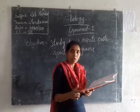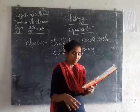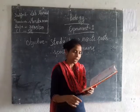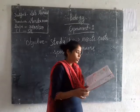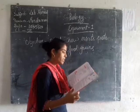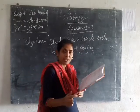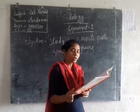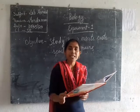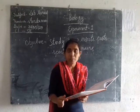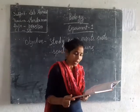You can review the experiment title from your lab manual on page number 43. The experiment is to study how pests will spoil your food grains — that is, how insects or pests spoil the food grains.